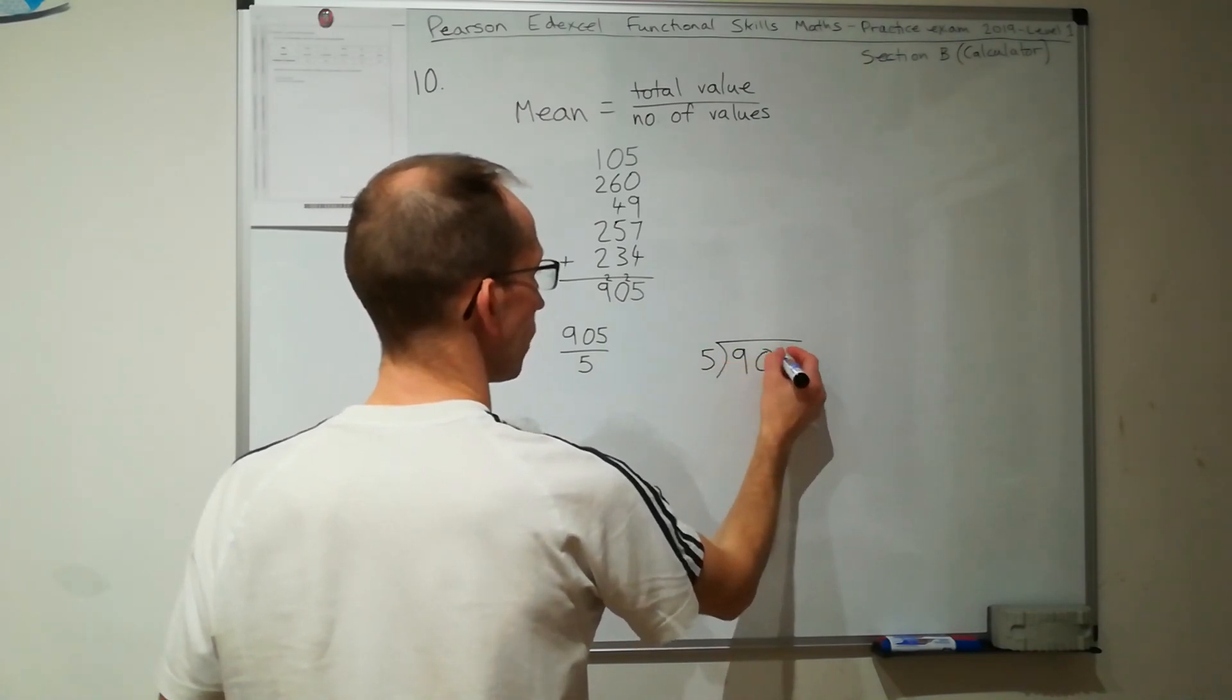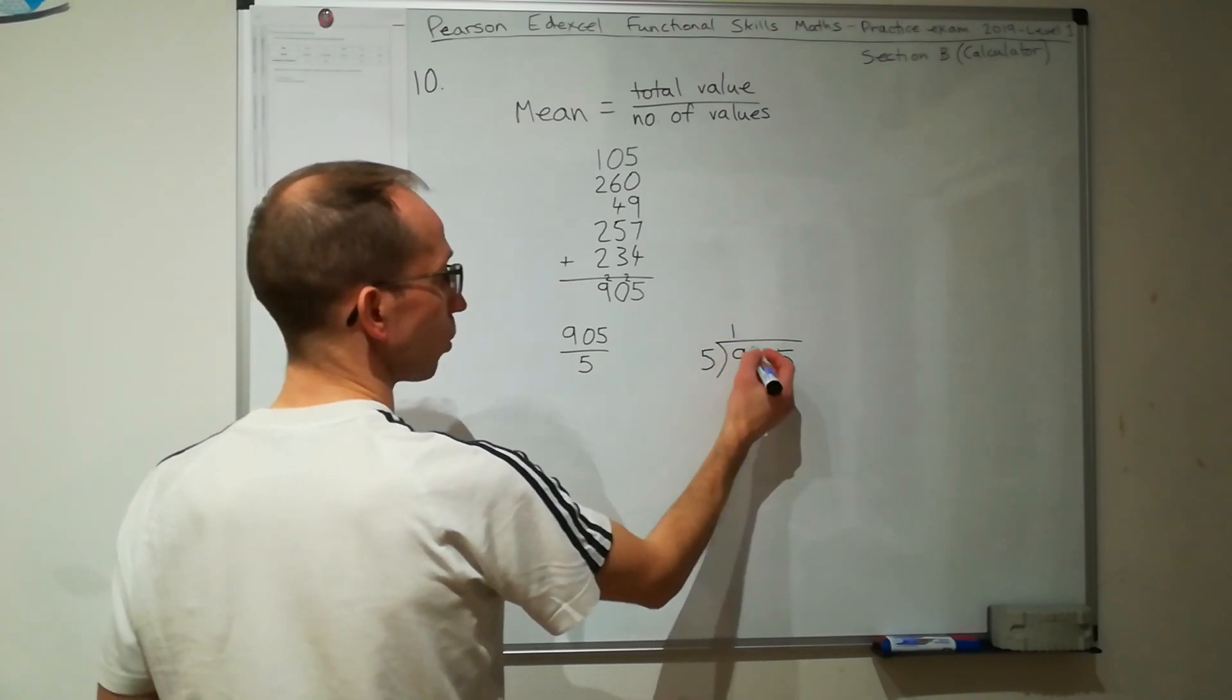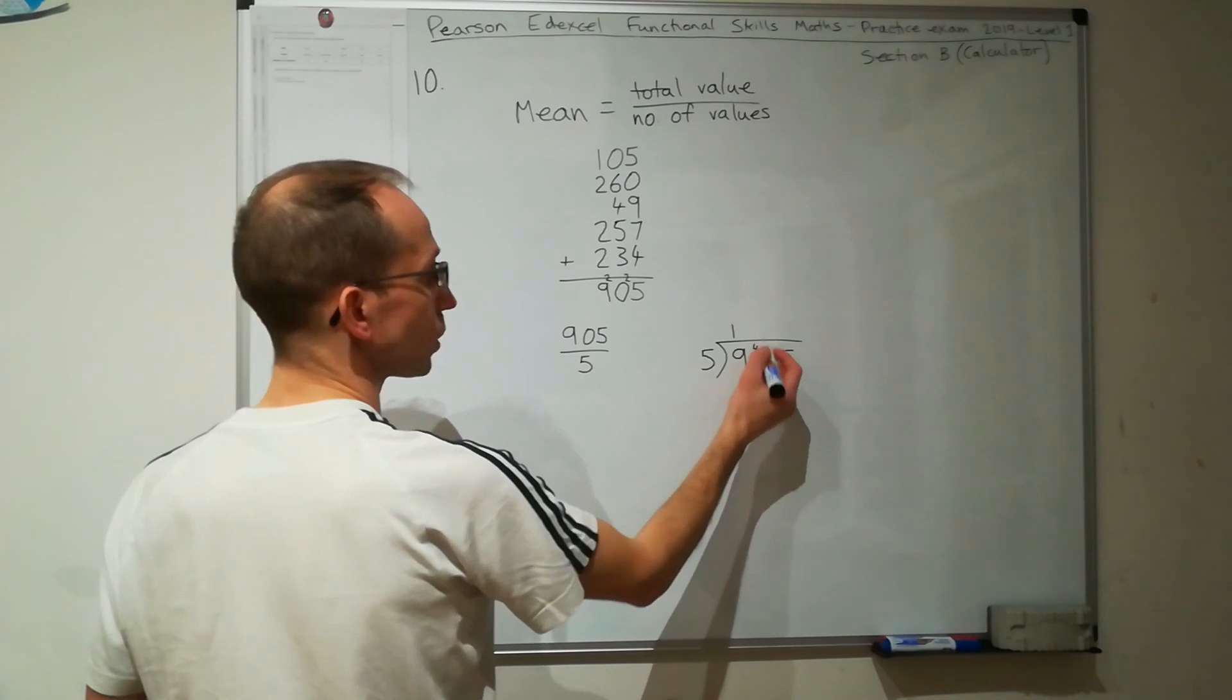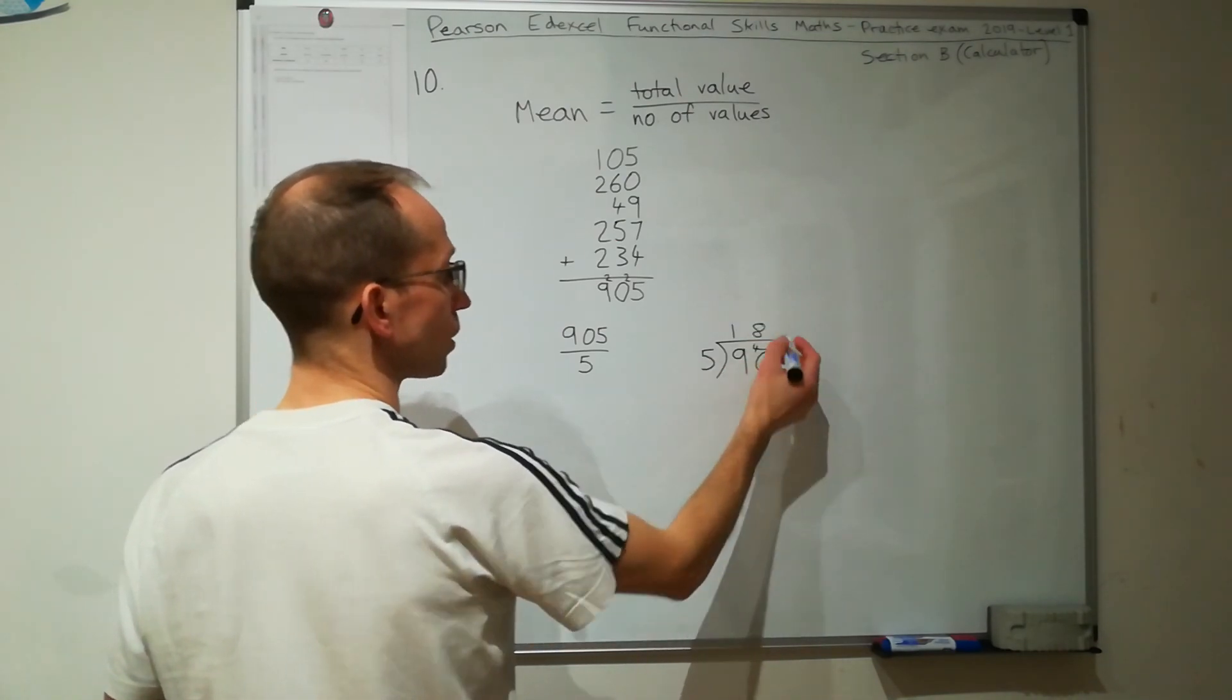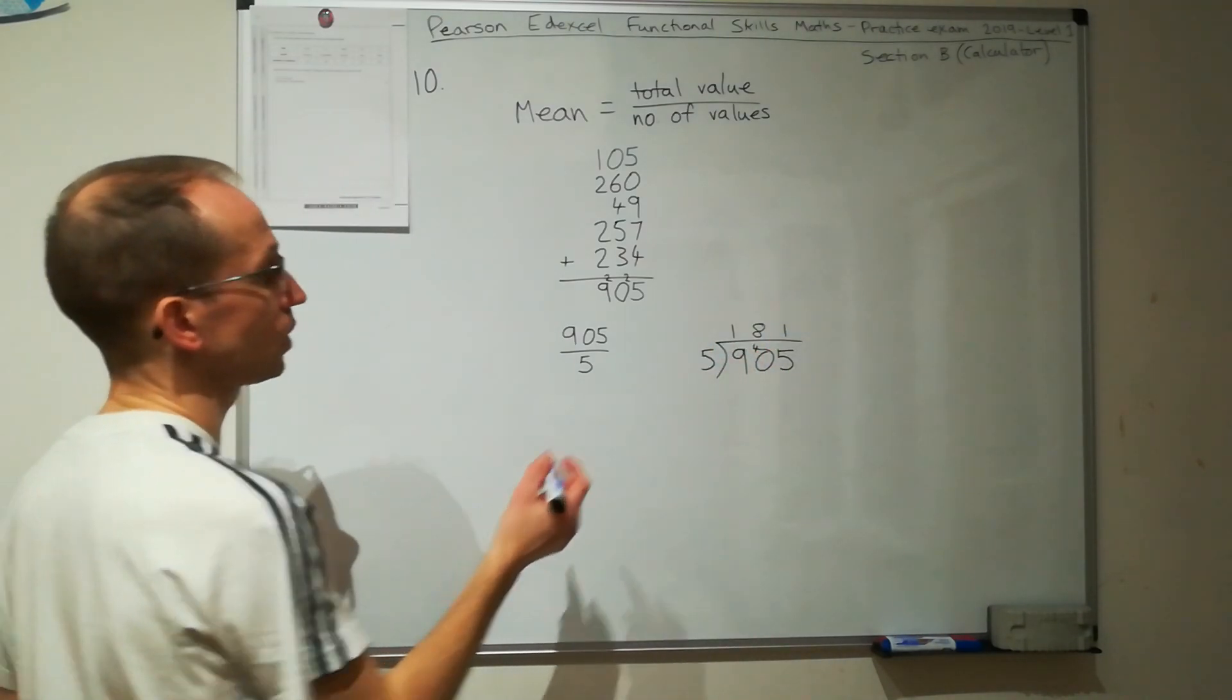But I think it's always nice to do this. 5 goes into 9 once, with remainder 4. 5 goes into 40 8 times, no remainder, and 5 goes into 5 once. So we end up with a mean of 181.